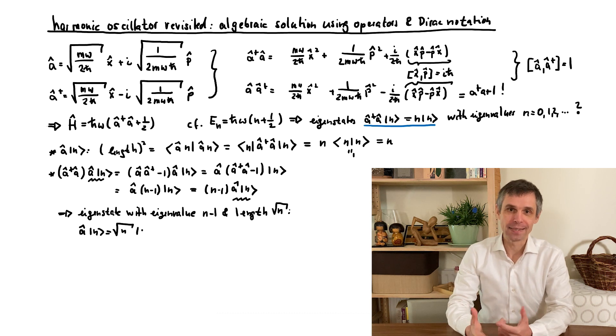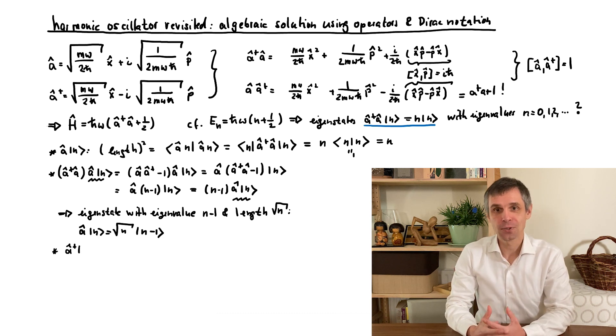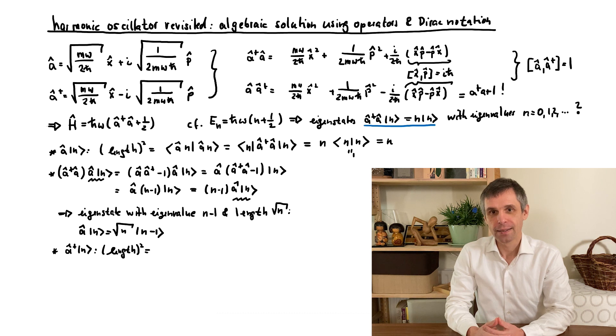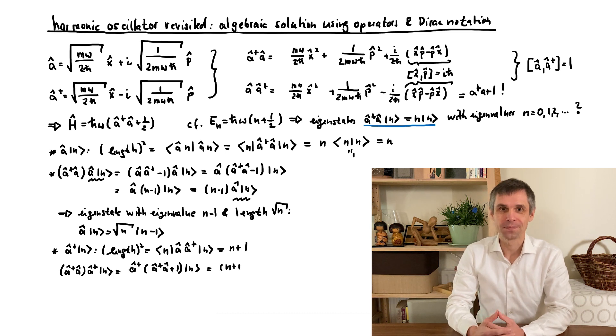We can follow exactly the same steps when we apply A-dagger to such a state. And then we first find that the new state has the squared length n plus 1 and turns out to have an eigenvalue n plus 1. So we can write it like this.